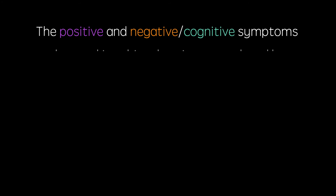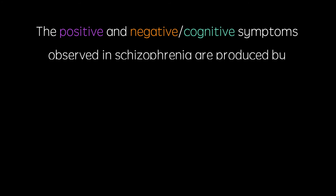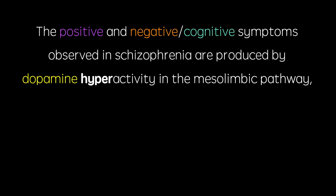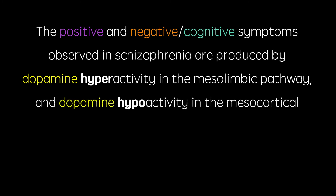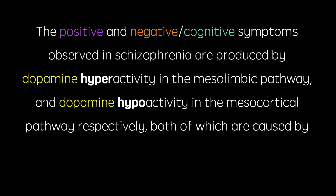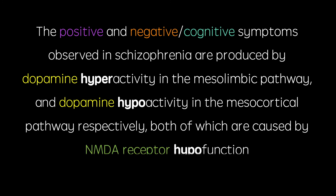The positive, negative, and cognitive symptoms observed in schizophrenia are produced by dopamine hyperactivity in the mesolimbic pathway and dopamine hypoactivity in the mesocortical pathway respectively, both of which are caused by NMDA receptor hypofunction. The vast majority of drugs used to treat schizophrenia are based on these pathways, which I'll discuss in my next video.